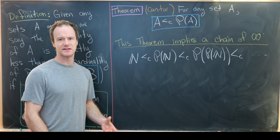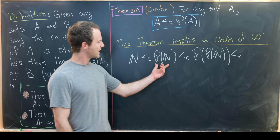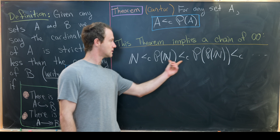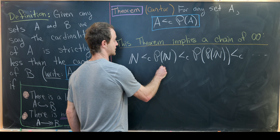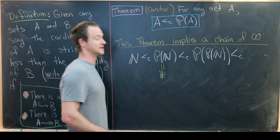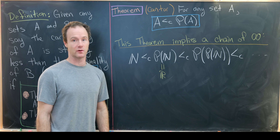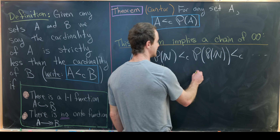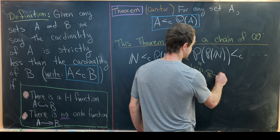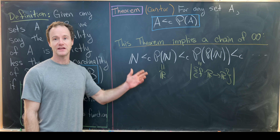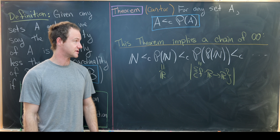Are there obvious sets equal in cardinality to the sets in this chain? There are. The power set of the natural numbers is in fact equal in cardinality to the real numbers. And the power set of the power set of the natural numbers is equal in cardinality to the set of all functions from R to R. As you move further up the chain, you run out of common sets to compare to.